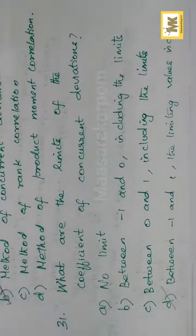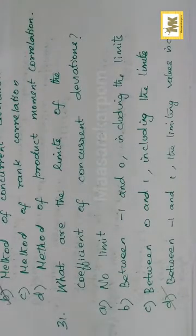Limits for the coefficient of concurrent deviation — since it is also a correlation coefficient, the limits are minus 1 to 1, both inclusive.